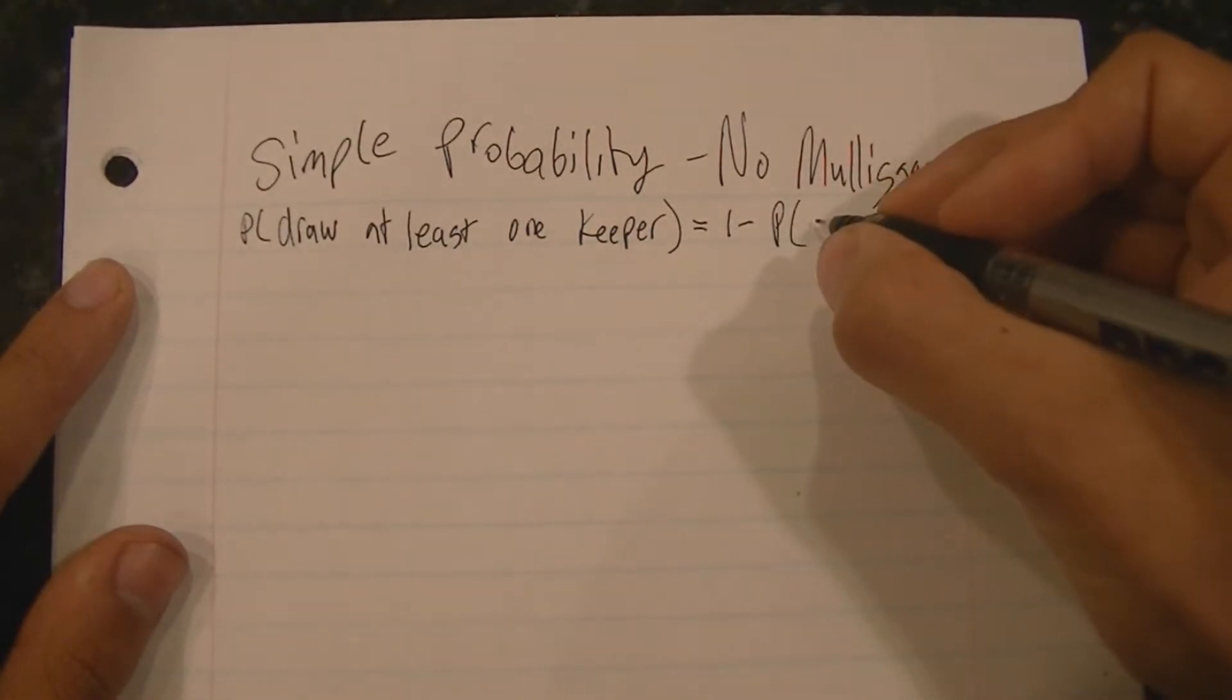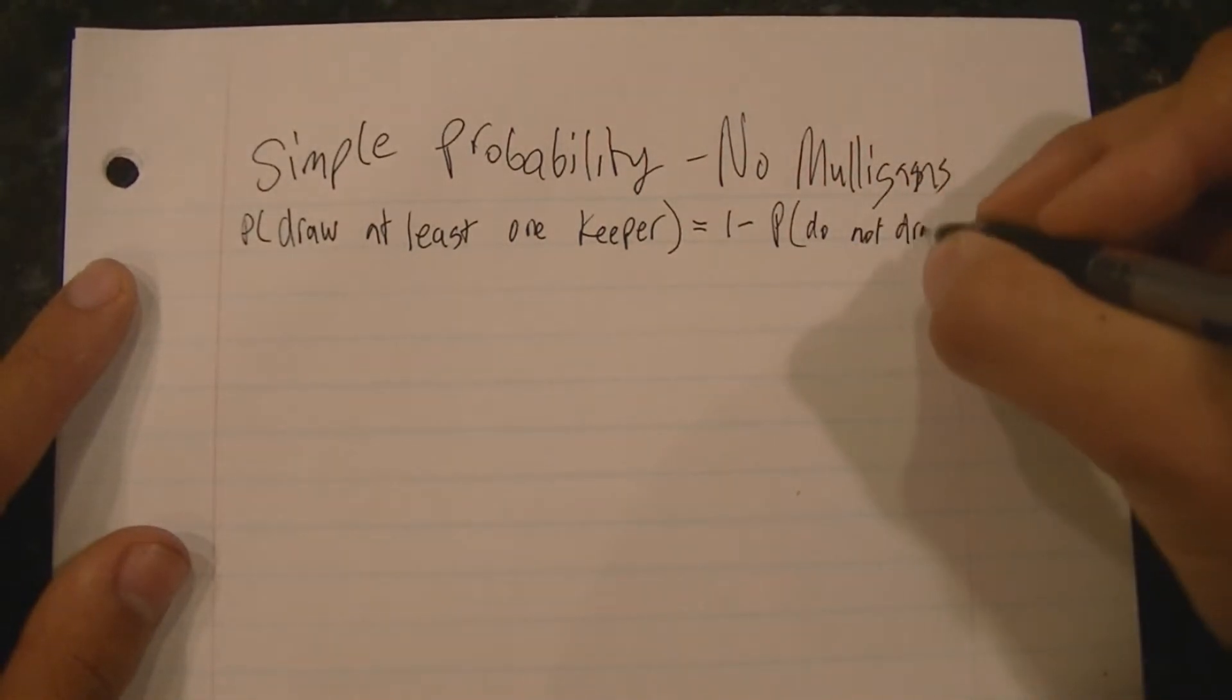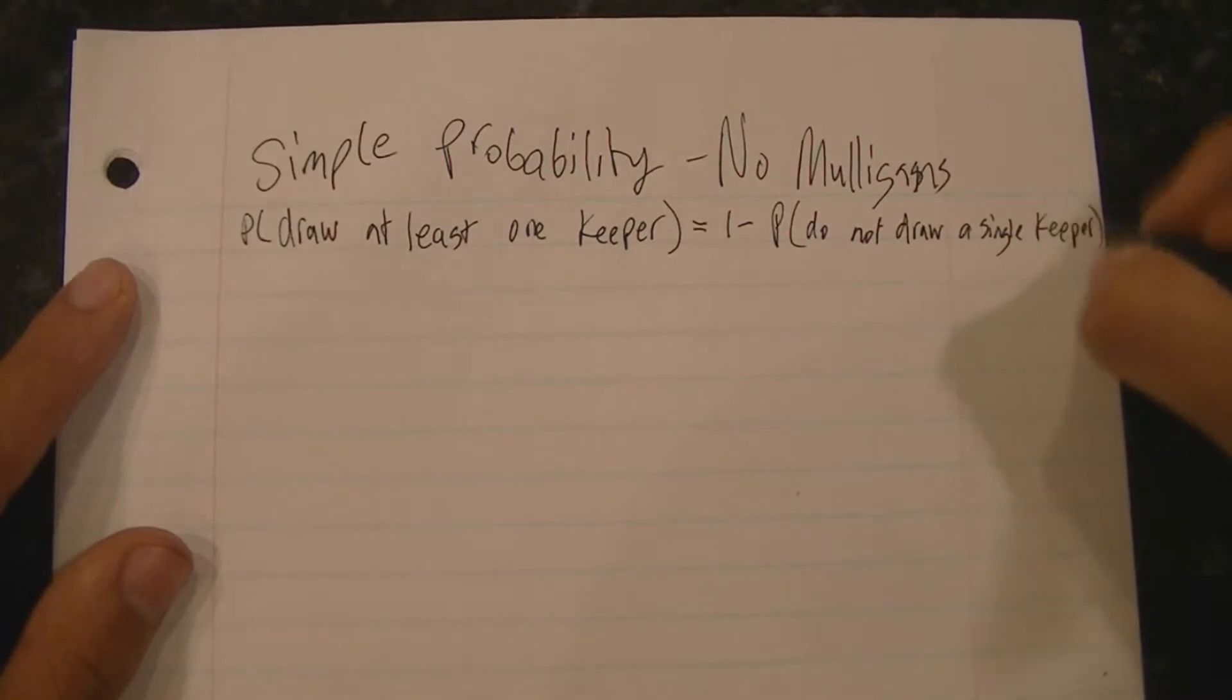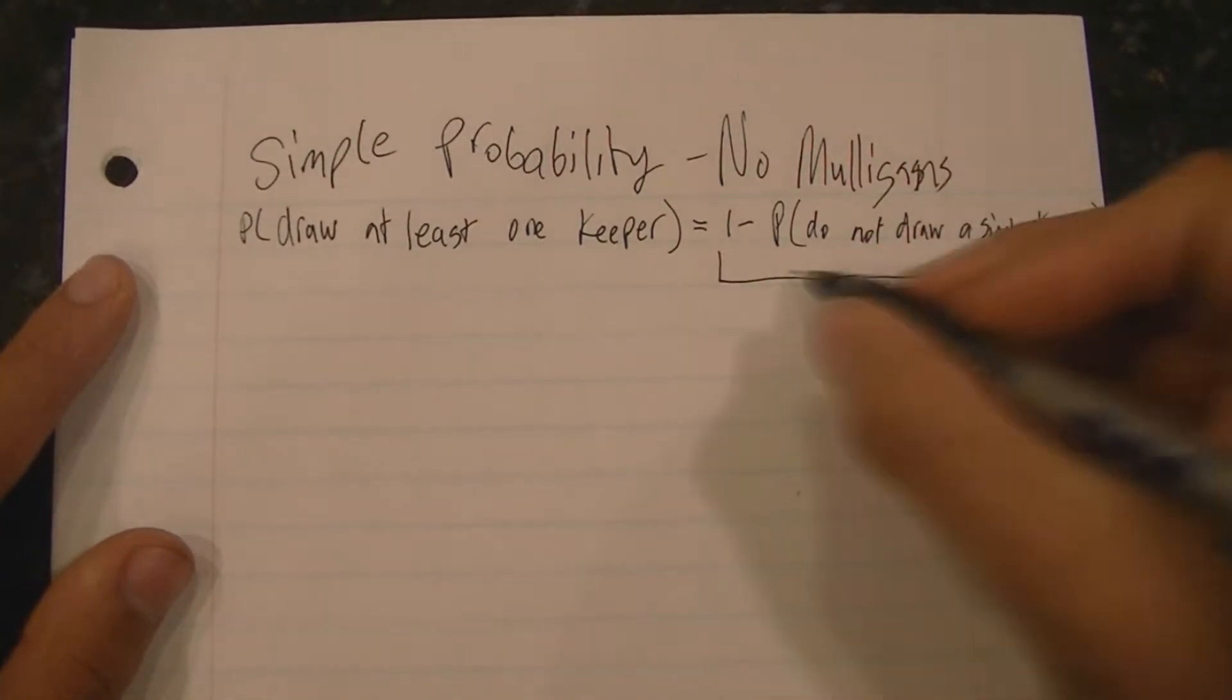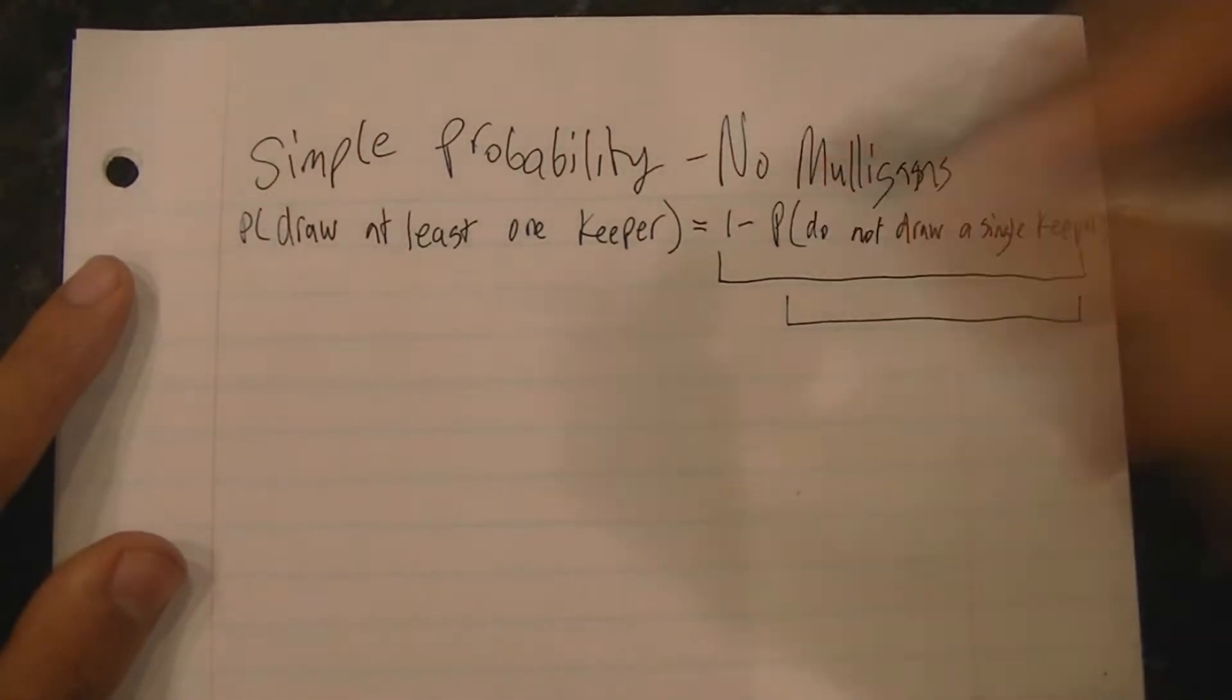Alright, so the probability that you have at least one Keeper is equal to one minus the probability that you have not drawn a single Keeper at all in your entire deck.